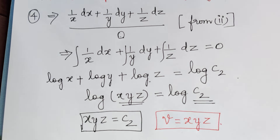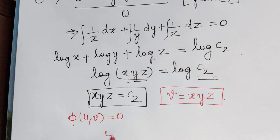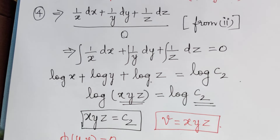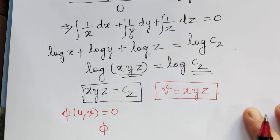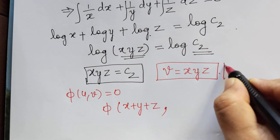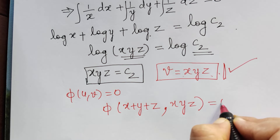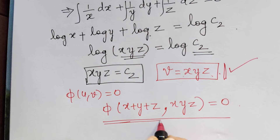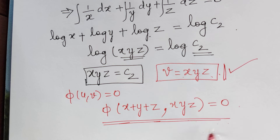Therefore the general solution φ(U, V) = 0 is φ(x + y + z, xyz) = 0. We have obtained the general solution of the given Lagrange's partial differential equation using the method of multipliers. Hope you have understood this problem — it is a very significant problem. Thank you.